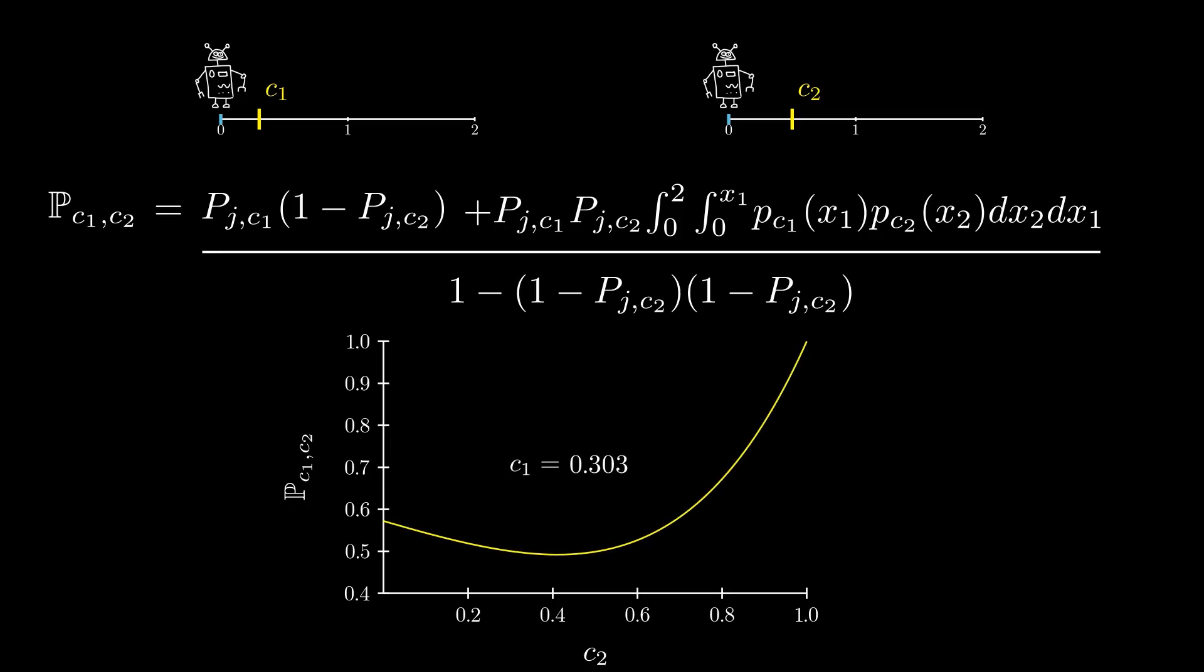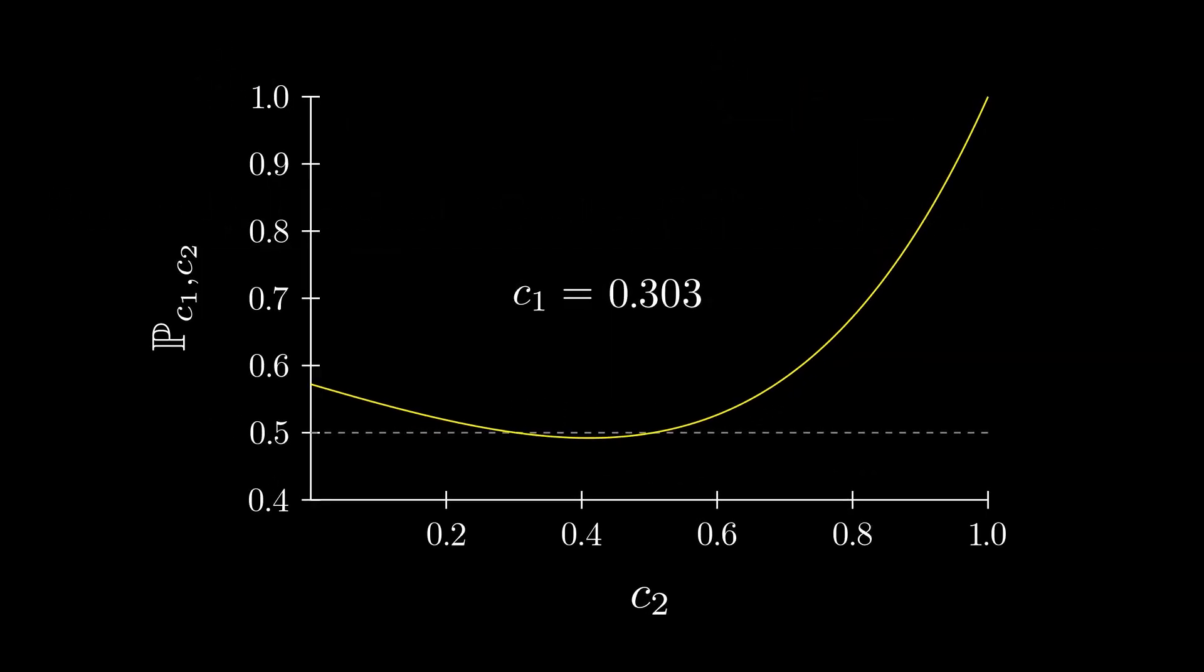So now let us look at the probability that we win if we run the strategy that maximizes our average score. For most values of our opponent's cutoff, C2, we win over 50% of the time. However, there is a narrow region around 0.4 where the opponent can pick a strategy that beats us more than half of the time.